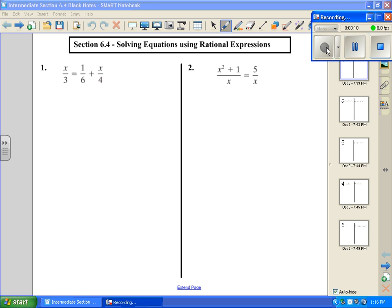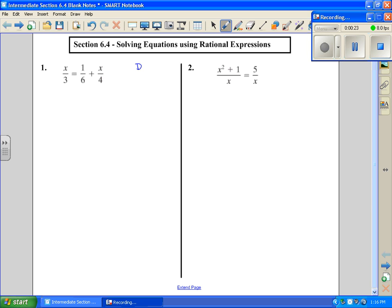So the first thing we always have to do is we want to check our domain. We want to make sure that there's no variables in our denominators. If there's not any variables in our denominator, then we don't have any restrictions, and our domain is going to be all real numbers. So the first thing we want to do is check our domain.